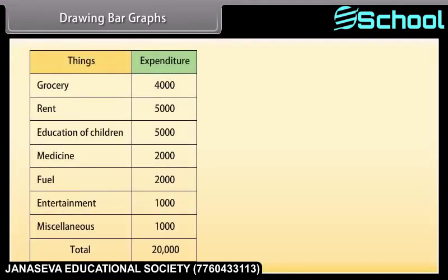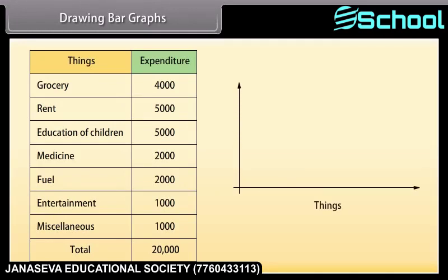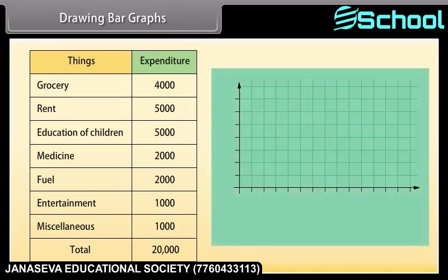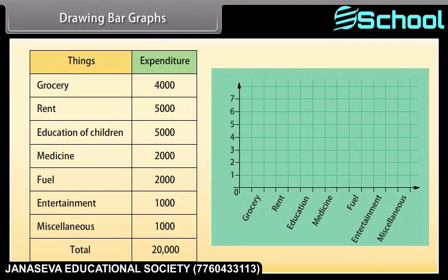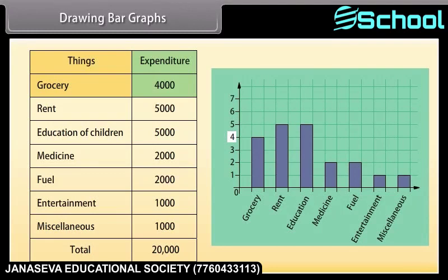Now we will learn how to draw the bar graph. This table shows the data of the expenditure of a family with a monthly income of 20,000. For making the bar graph, we use the items on the horizontal axis and expenditure on the vertical axis. Mark the items and the expenditure on both axes — here one means one thousand, two means two thousand. To represent the first item, grocery, we make a bar of unit 4. Similarly, other items are represented, leaving a gap of one unit between two consecutive bars.